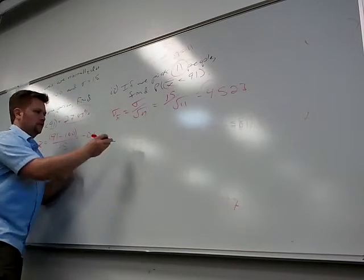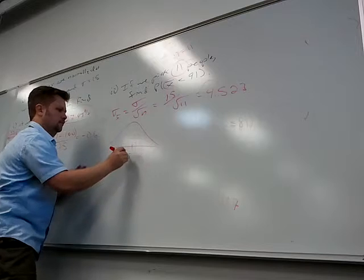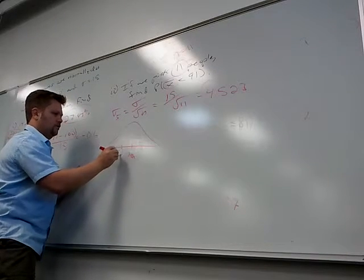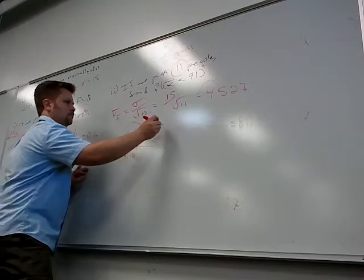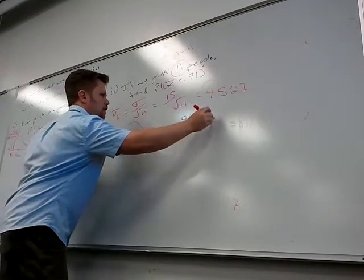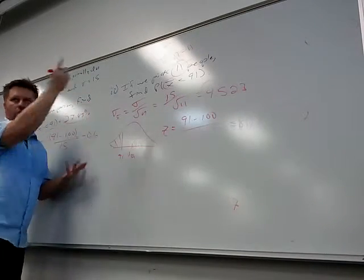So now all the steps are the same. There's 91. There's 100. There's 91. But now when I go to make my z-score, I divide by 4.523.